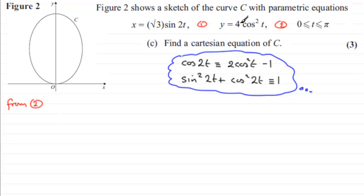If I was to head towards this area here, I can see that if I divide both sides of equation two by two, I get that therefore y over 2 would equal cos squared t.